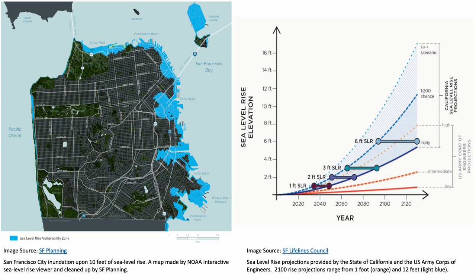The map on the left shows San Francisco city inundation upon 10 feet of sea level rise, made by the NOAA Interactive Sea Level Rise Viewer and cleaned up by SF Planning. The map on the right shows sea level rise projections provided by the state of California and the US Army Corps of Engineers. By 2100, rise projections range from one foot to 12 feet — about six to eight feet expected by California, and only three feet by the Army Corps of Engineers. The graph does a really good job representing the uncertainty surrounding sea level rise projections, and was made by SF Lifelines Council.